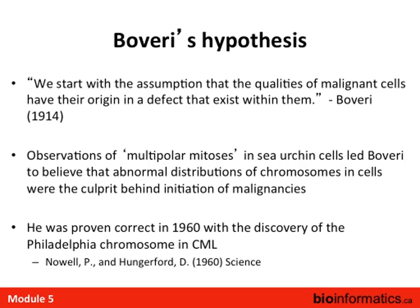As early as the early 1900s, Boveri suggested that the distribution of chromosomes may affect how a cell proliferates. He assumed that malignant cells have their origin in a defect within them — disruption of the genome itself, or misconfiguration of the genome, can lead to abnormal cell growth and proliferation. He studied sea urchin cells and concluded that an abnormal distribution of chromosomes can lead to cellular proliferation, and that extra copies of particular chromosomes caused cells to proliferate in an uncontrolled manner.